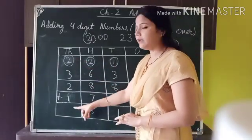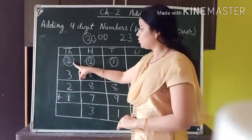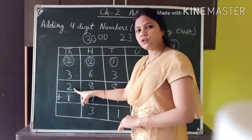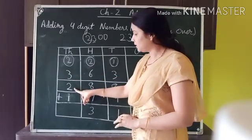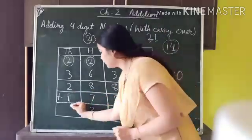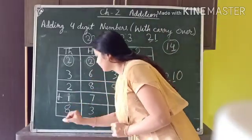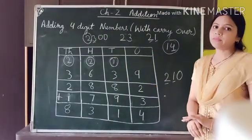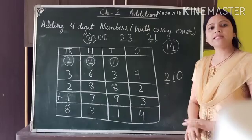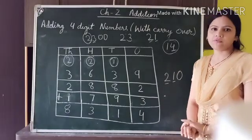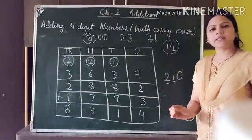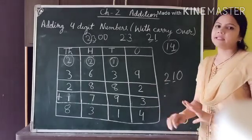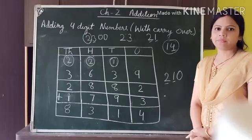Now adding at the thousands position: two plus three is five, five plus two is seven, seven plus one is eight. The final answer is 8314. I hope you have understood the carry forward concept. This chapter is now complete — you can pause the video, write these examples in your copy, and then check your assignment for homework.